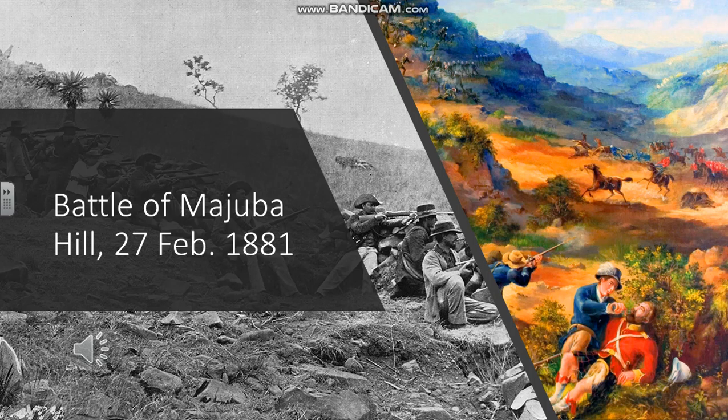At the Battle of Majuba Hill, they used a leapfrog manoeuvre where one soldier would cover another as he moved forward, and they even beat the British despite the fact that the British occupied the top of the hill. This defeat was fairly clear cut and was to lead to peace negotiations.